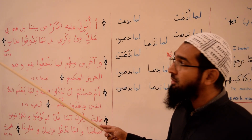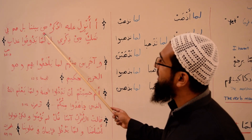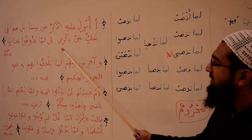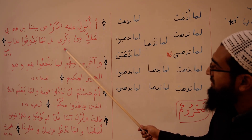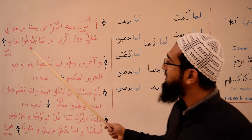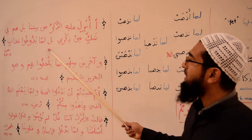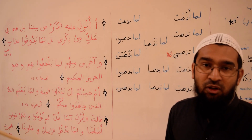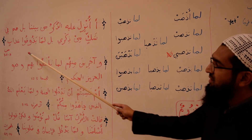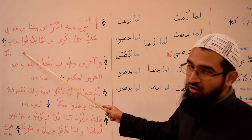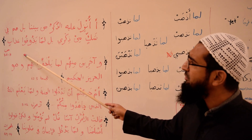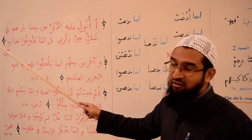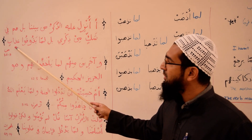أَأُنزِلَ عَلَيْهِ الذِّكْرُ مِن بَيْنِنَا بَلْ هُمْ فِي شَكٍّ مِّن ذِكْرِي — but no, they are in doubt of my reminder. Allah is saying they are in doubt of the Qur'an. بَلْ لَمَّا يَذُوقُوا عَذَابِ — Nay, they have not tasted my punishment yet. May Allah protect us all from the عذاب of Allah subhanahu wa ta'ala. The word عذابِ uses a kasra in place of the ya, a style found in Qur'an and Arabic poetry.